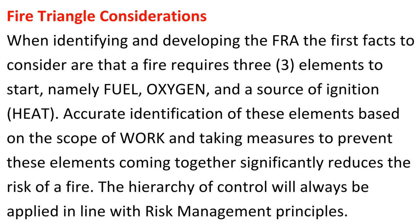When identifying and developing the FRA, the first facts to consider are that a fire requires three elements to start: namely fuel, oxygen, and a source of ignition — heat. Accurate identification of these elements based on the scope of work, and taking measures to prevent these elements coming together, significantly reduces the risk of a fire. The hierarchy of control will always be applied in line with risk management principles.